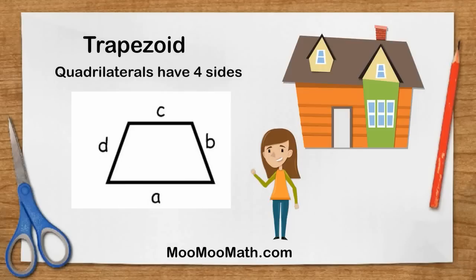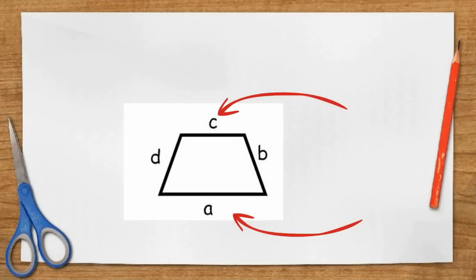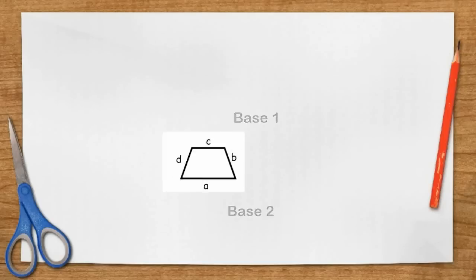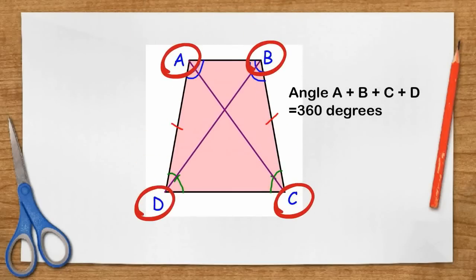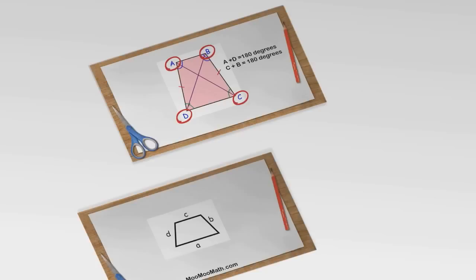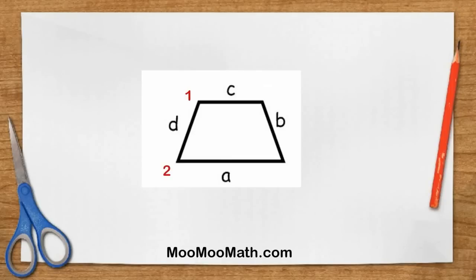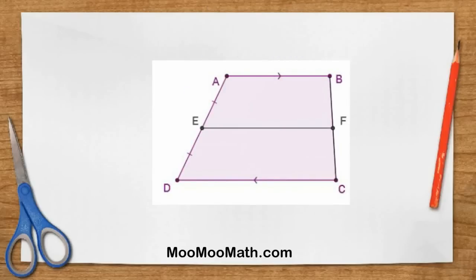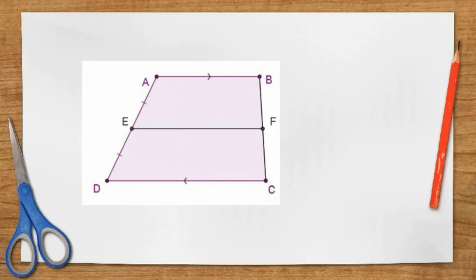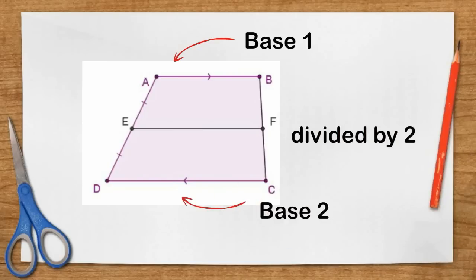A trapezoid is a quadrilateral with one pair of parallel sides. The parallel sides of the trapezoid create the two bases. The sum of the interior angles of a trapezoid equals 360 degrees, and the angles on each side are supplementary. A trapezoid has four vertices, also called corners. The median of a trapezoid is the line that connects the midpoint of the two legs. The formula for finding the median is: take base 1 plus base 2 and divide by 2.